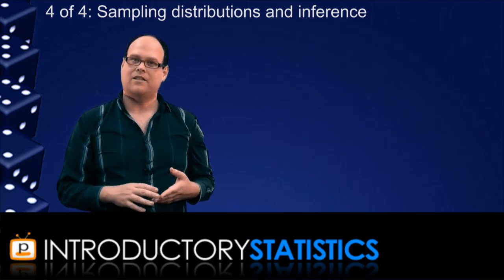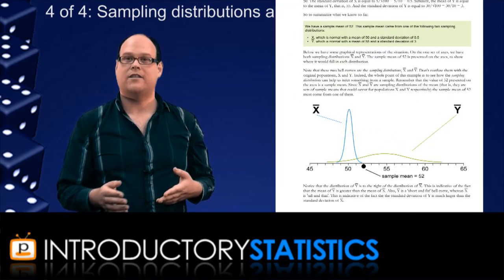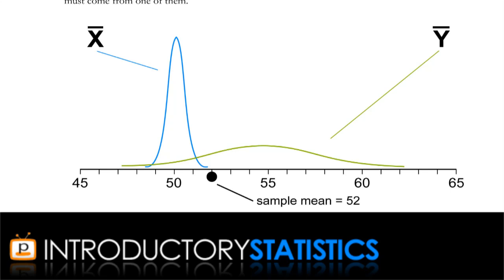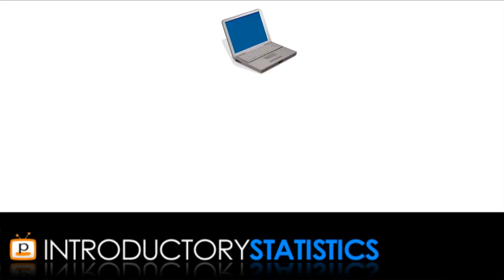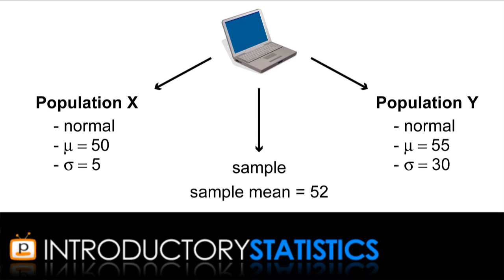Well, what I'll do is discuss an example that is covered at length in the Pedisco textbook to give you an idea of how sampling distributions help in inference. Suppose you have a friend who has written two computer programs, and one spits out numbers from population x, which is normal, with a mean of 50, and a standard deviation of 5. The other program spits out numbers from population y, which is normal, with a mean of 55, and a standard deviation of 30. Your friend gives you a sample from one of these two programs, but you don't know which one. The sample has a mean of 52, so which population do you think is more likely?